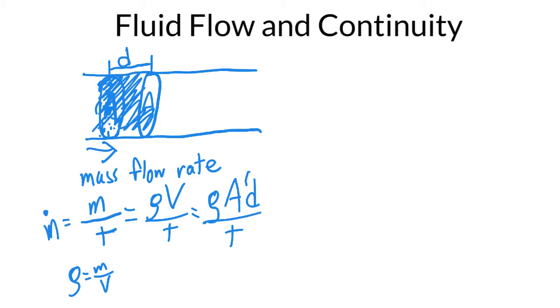So we could write this as density, area, distance over time. But what is distance over time? Distance over time is a velocity. So our mass flow rate, we're going to define this two ways. One would be the mass per time, which makes sense. And the second one would be the density times the area times the velocity.